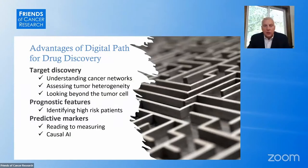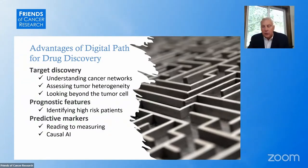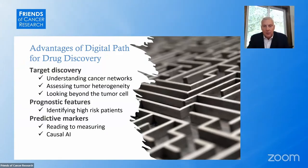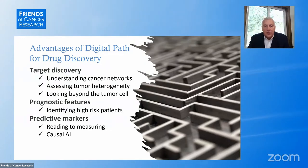Digital pathology has applications across a different spectrum of drug development, from target discovery to clinical trial predictive and prognostic markers. We're able to understand the complexity of cancer networks and assess tumor heterogeneity. Interestingly, we can look beyond the tumor cell — genomics is usually focused on the tumor cell, but there's important information in both the tumor microenvironment and the tumor matrix and stroma cells, which are identified by AI features not picked up by the pathologist.